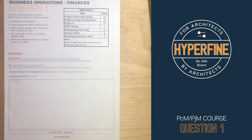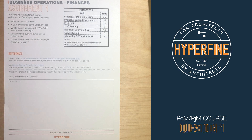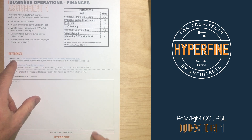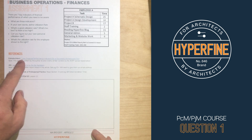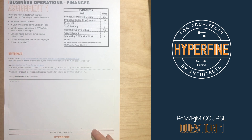The seven key indicators are: utilization rate, overhead rate, break-even rate, net multiplier, profit to earnings ratio, net revenue per employee, and aged accounts receivable. These are all defined in the Architect's Handbook of Professional Practice. There are also good articles online — the Entrez Architect article, link in the description, covers all those terms.